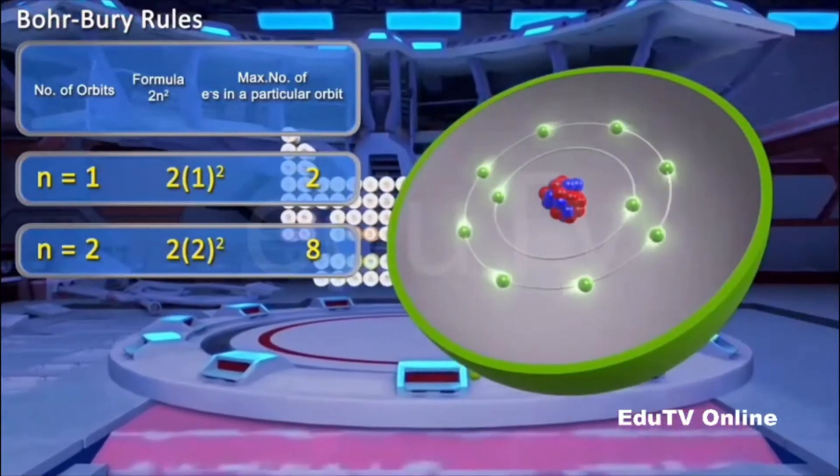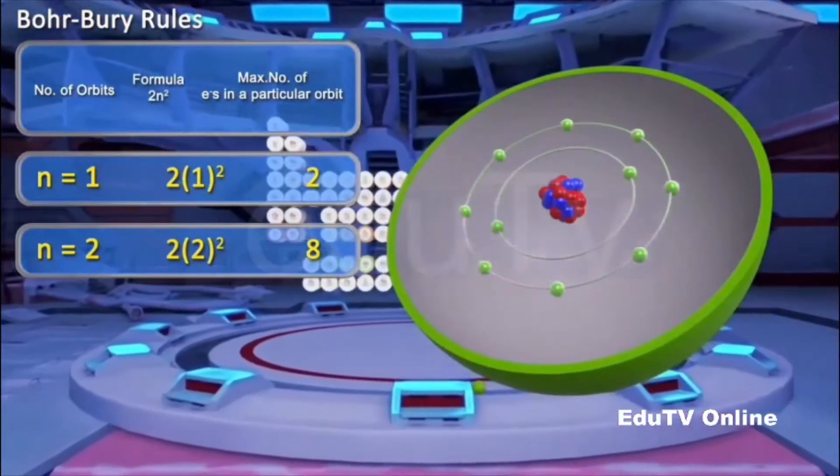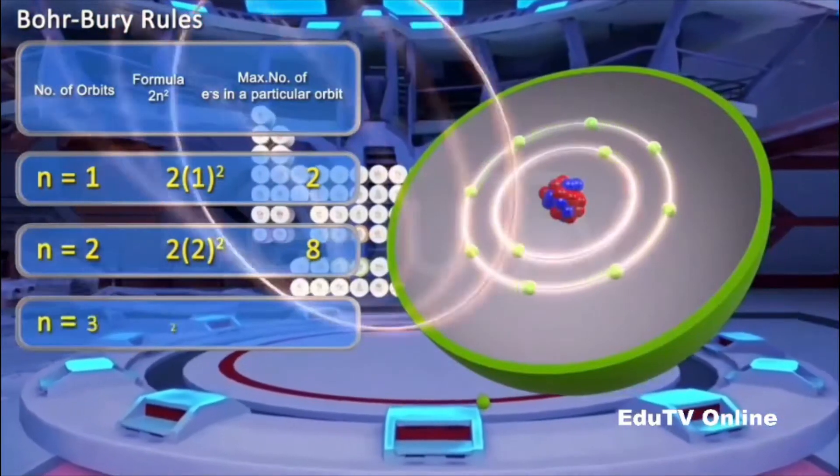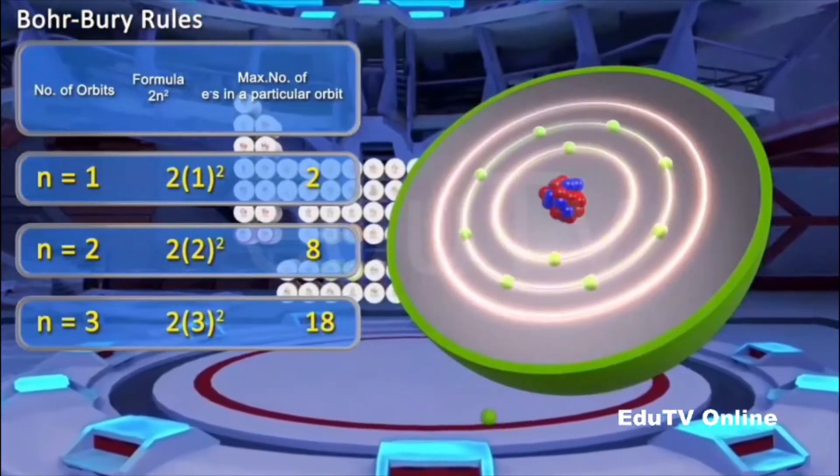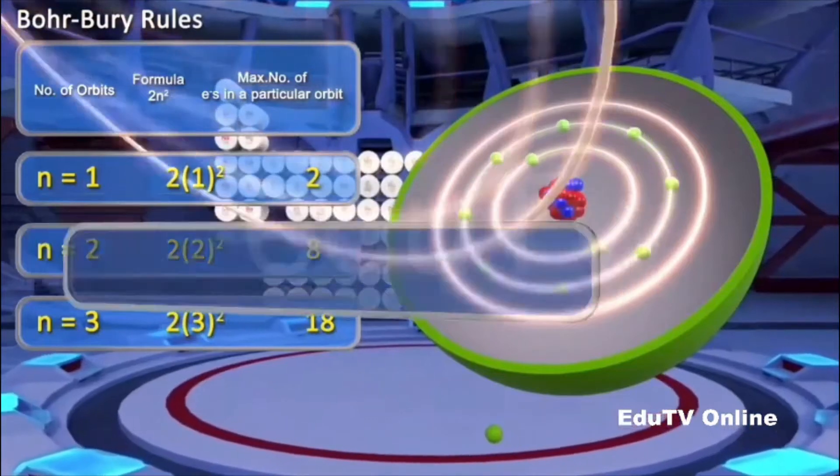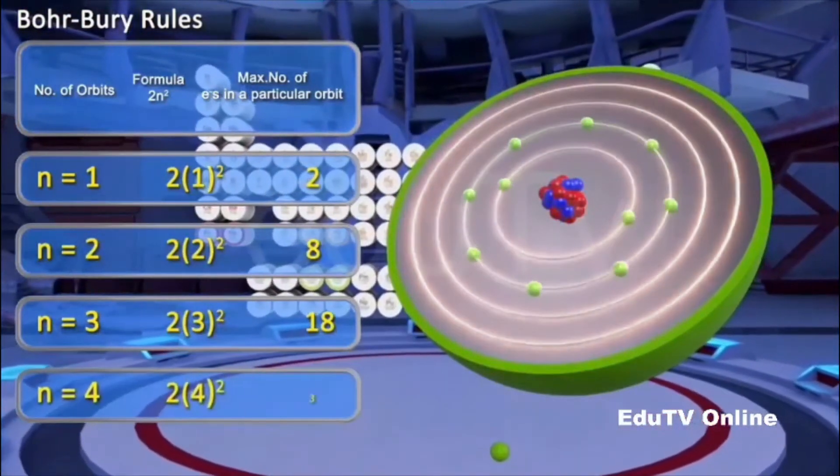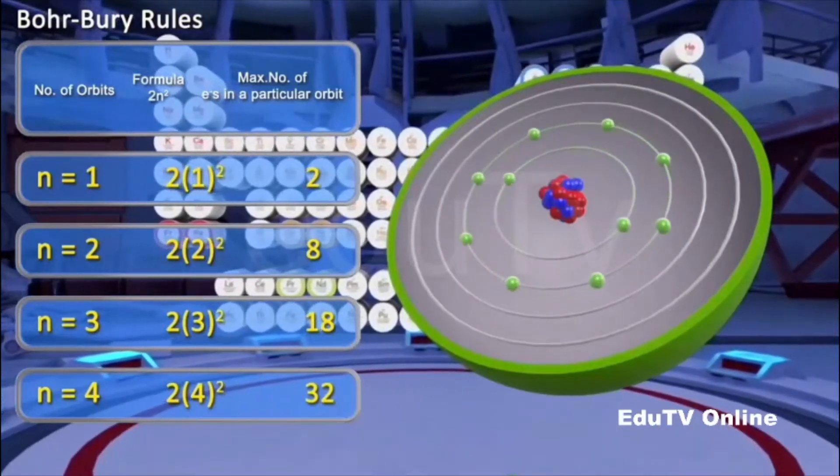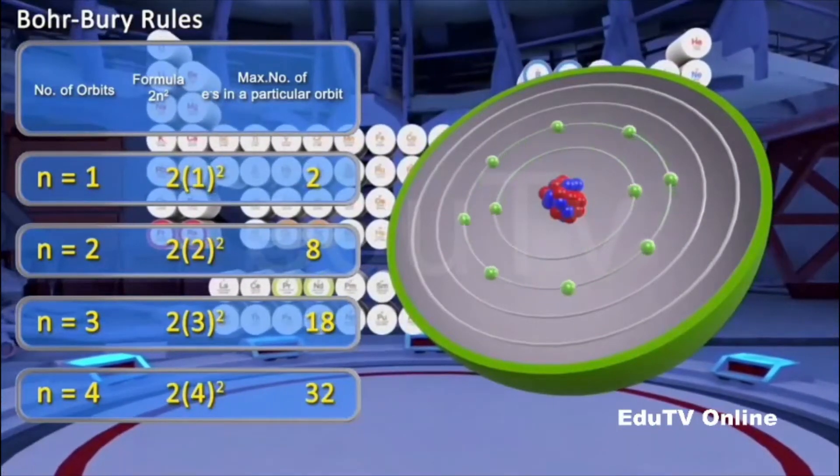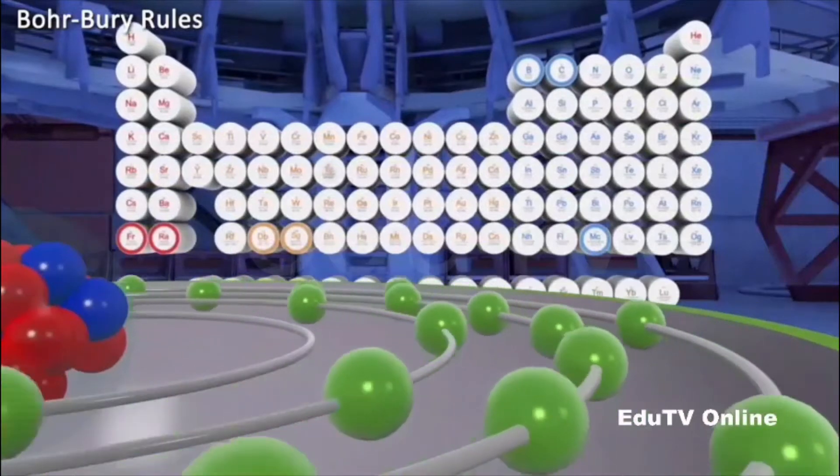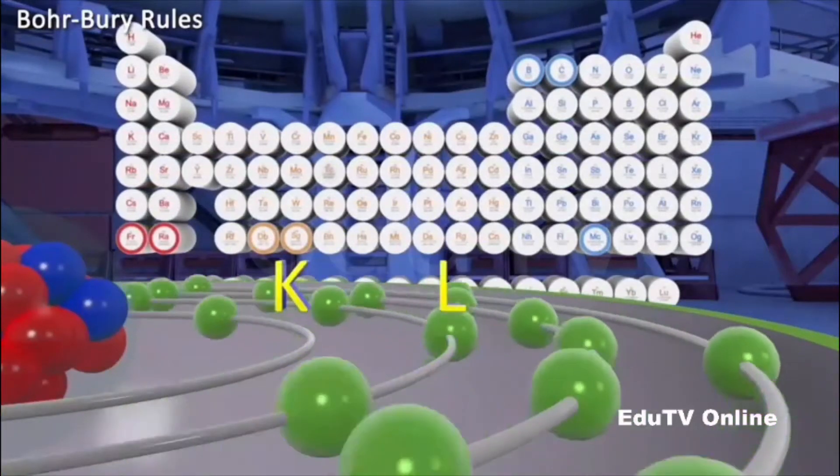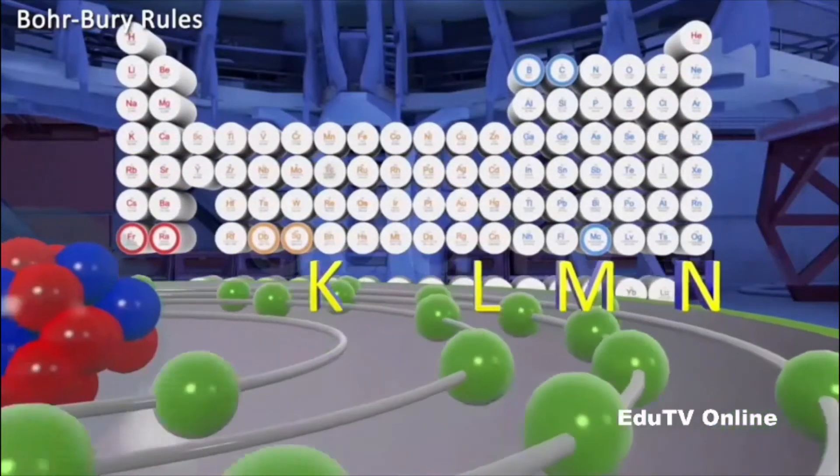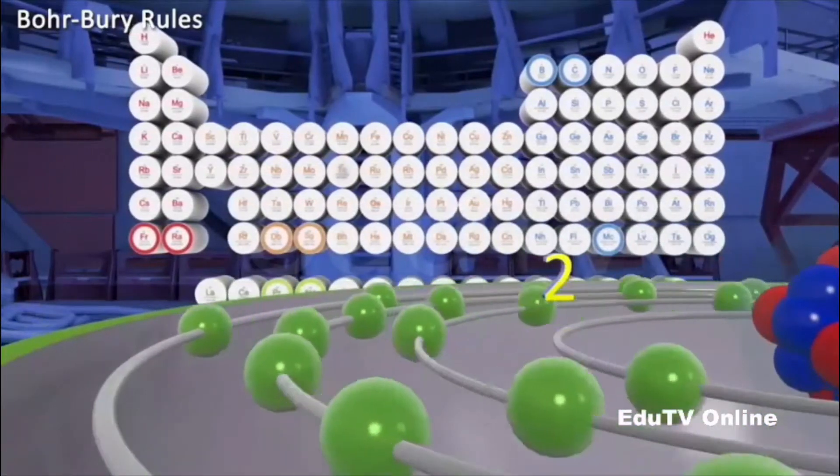Similarly, the third orbit, or the shell M, and the fourth orbit, or the shell N, can have a maximum of 18 and 32 electrons, respectively. Therefore, the shells K, L, M, and N can accommodate a maximum of 2, 8, 18, and 32 electrons, respectively.